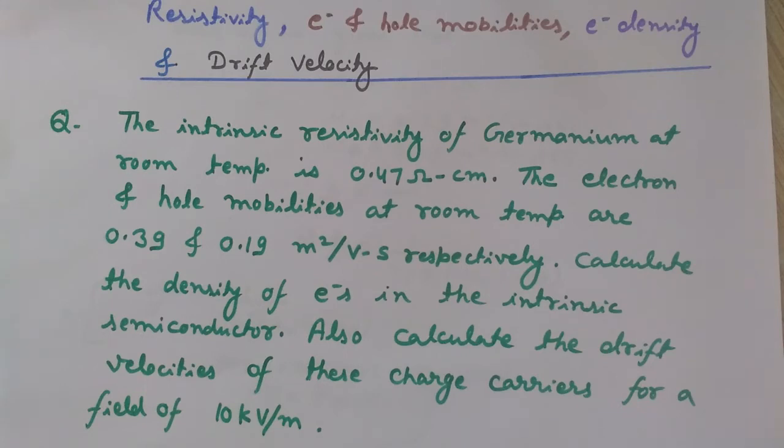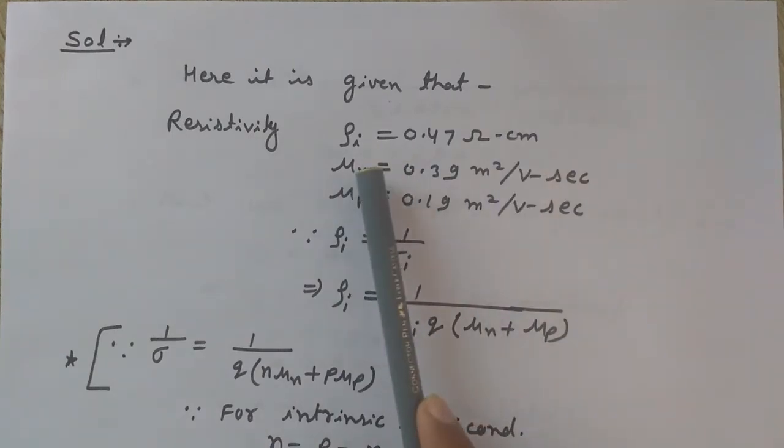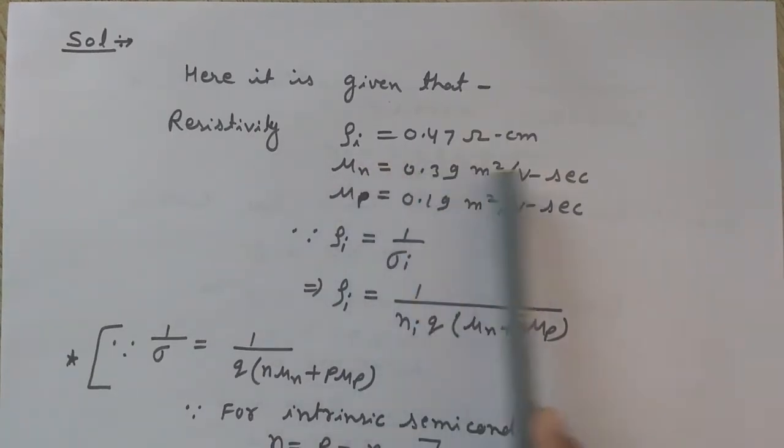Let's see the solution. Here it is given that intrinsic resistivity is 0.47 ohm-centimeter, mobility of electron and mobility of holes are these. Since I know that resistivity is inversely proportional to the conductivity, so rho_i is inversely proportional to sigma_i. I stands for the intrinsic, that is a pure semiconductor.